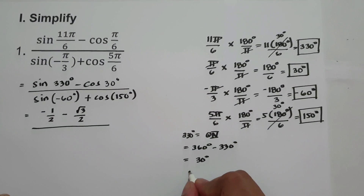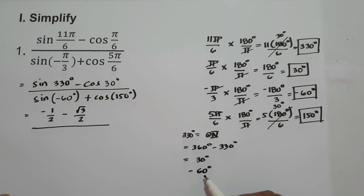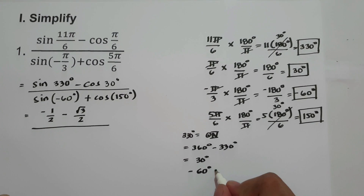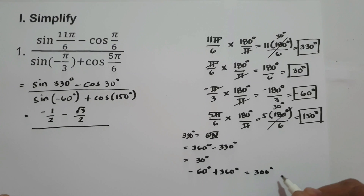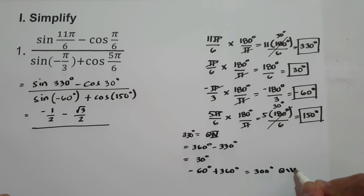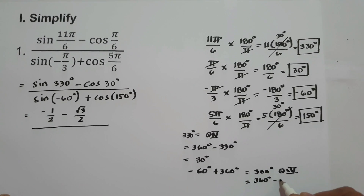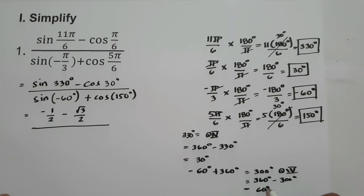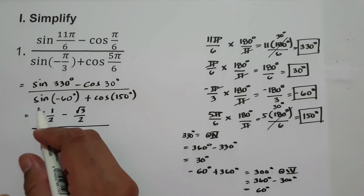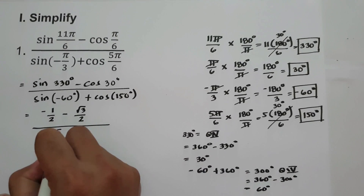Let us find the reference angle of negative 60 degrees. Since the given angle is negative, we convert it to a positive angle by adding 360 degrees: negative 60 plus 360 equals 300 degrees. 300 degrees is located in quadrant 4. The reference angle is 360 minus 300, which is 60 degrees. Sine 60 degrees in quadrant 4 is negative square root of 3 over 2.